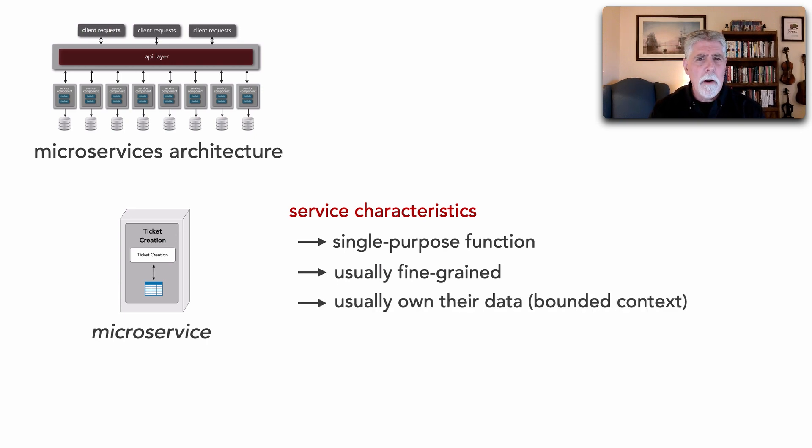They usually own their own data in a bounded context. This is very typical in a microservice. Now there are times when we do share data between services in what's called a data domain, but generally each service owns its own data. That's different than other architecture styles. And finally, because of that fine-grained nature, there is frequent communication typically between services in this architecture style.